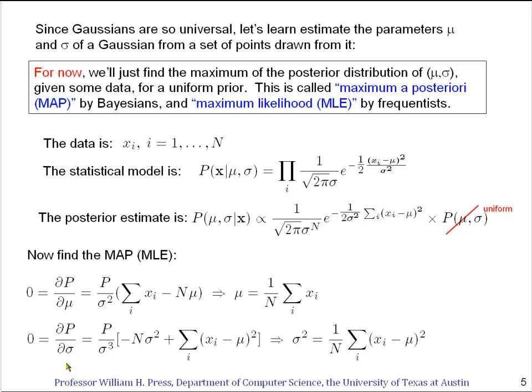Similarly, if you take the derivative with respect to σ, you'll get a formula like this, and you can see that the solution says that σ², the variance, is simply the average of the deviation of the individual data points from μ. And we had μ right up here. So that's pretty easy.